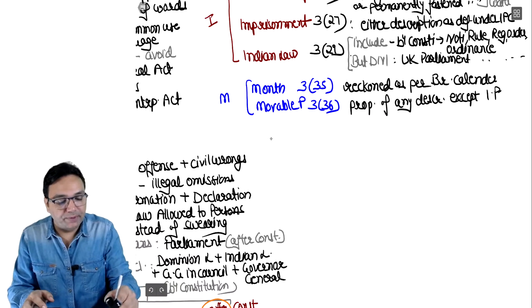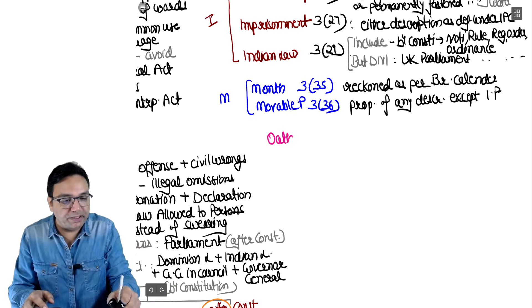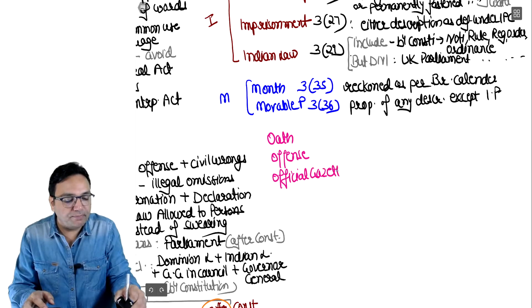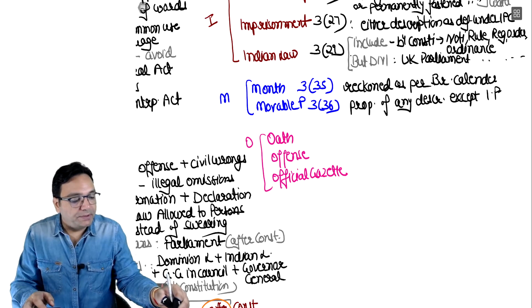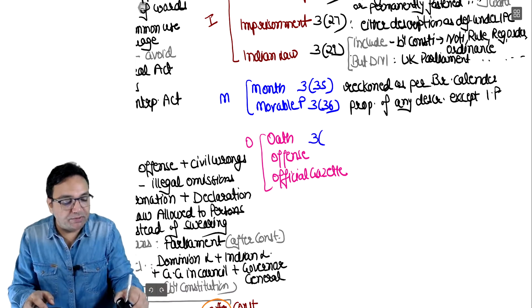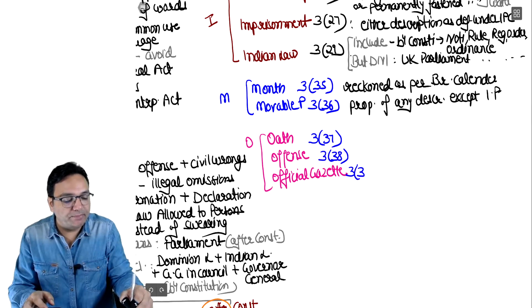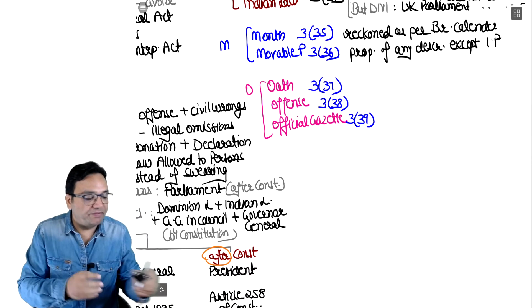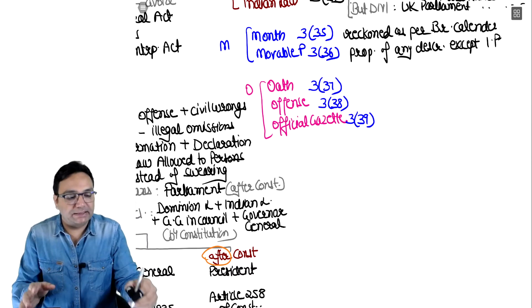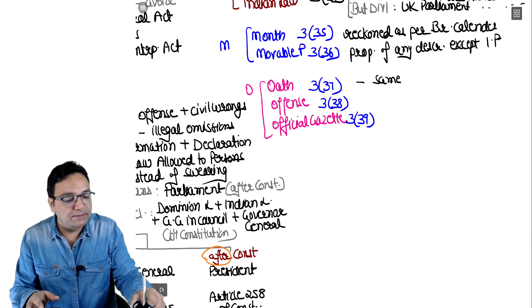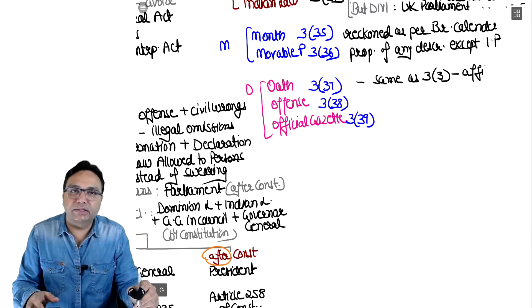Next in our course is 'oath' in subsection 38 and 'offense' in subsection 39. Oath's definition is the same as affidavit - copy paste - same as subsection 33: declaration, affirmation. Offense means doing or not doing something that should have been done, which is declared punishable by law for the time being in force. Official Gazette simply means Rajpatra - whether of Government of India or state government, any official gazette.